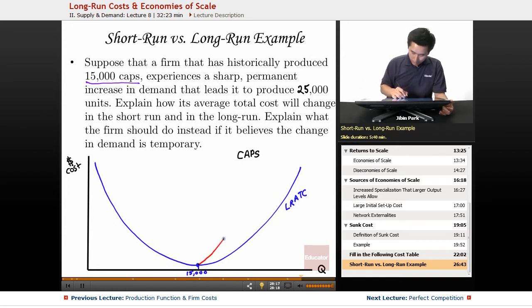However, what's going to end up happening here is you have a short-run. So you have ATC. This is ATC when you're making 15,000.